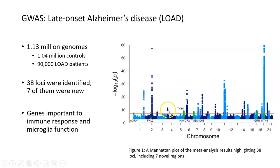You can see several different locations identified all along the genome, some of which we didn't know before. The previously unknown genes were found to be important in both immune response and the function of a particular type of glial support cell in the brain called microglia. There seems to be a link between decreased neuroimmunity in the brain and the development of late-onset Alzheimer's. Now that we know these new genes, researchers are looking into microglia and the immune response to better understand this type of Alzheimer's.